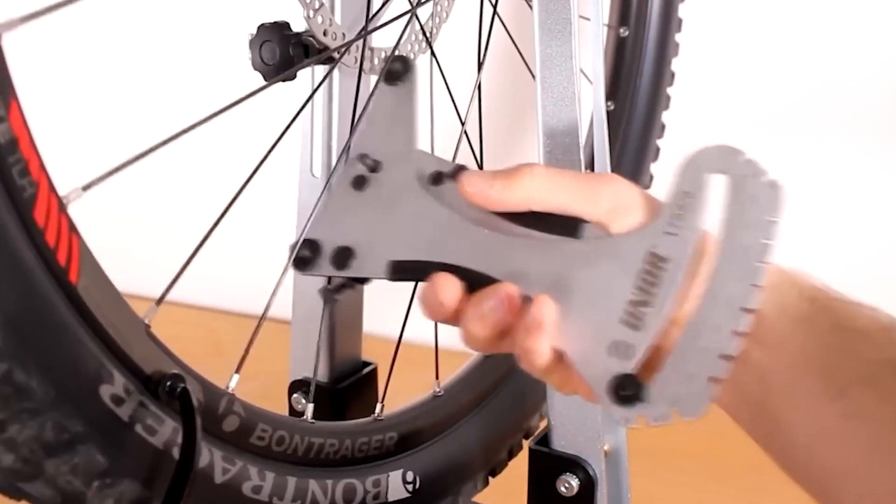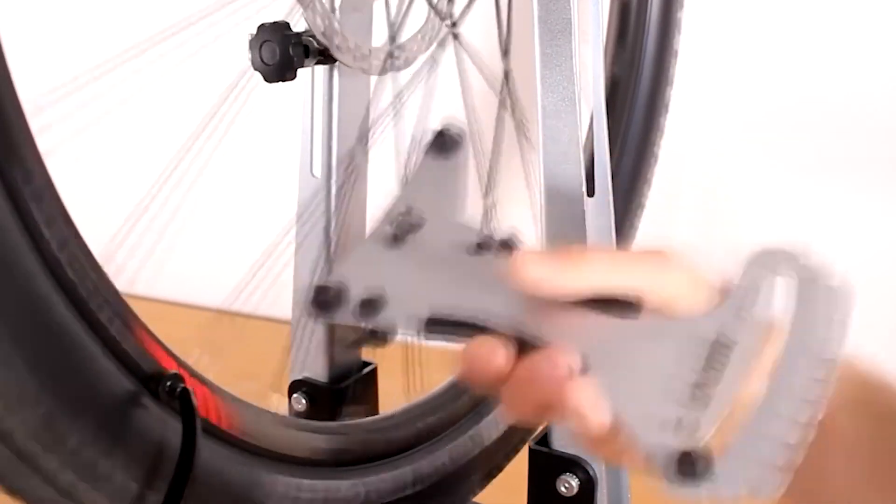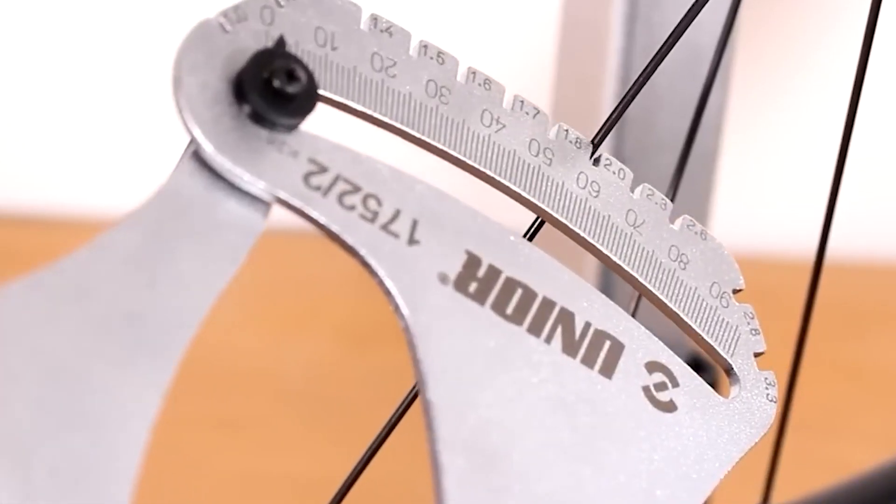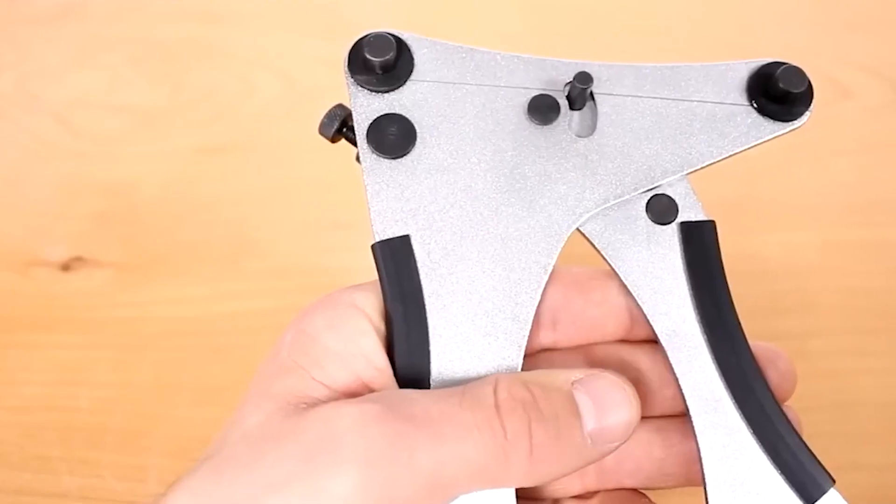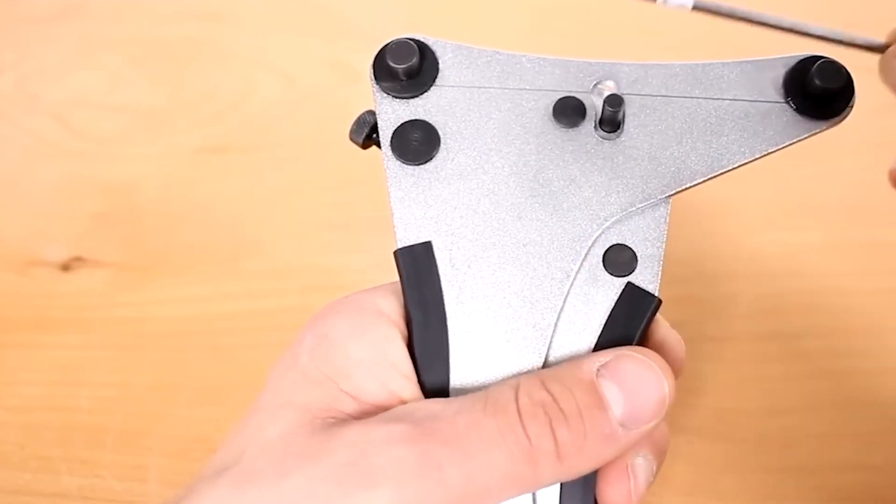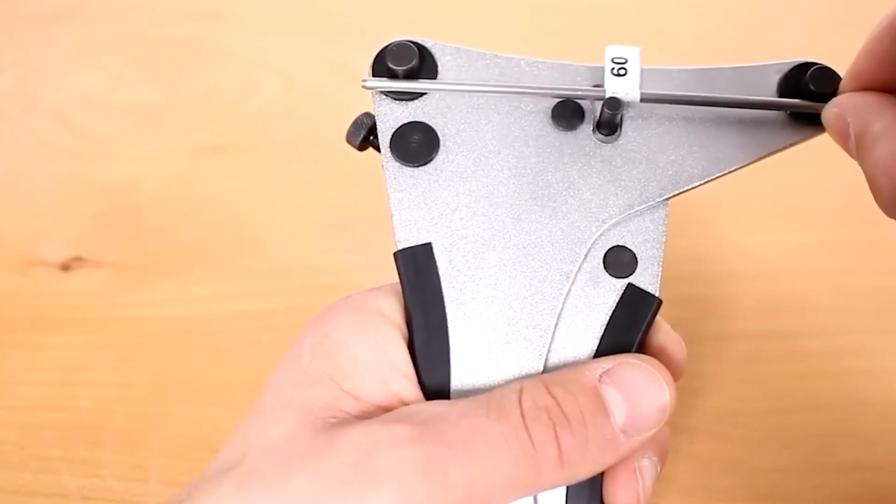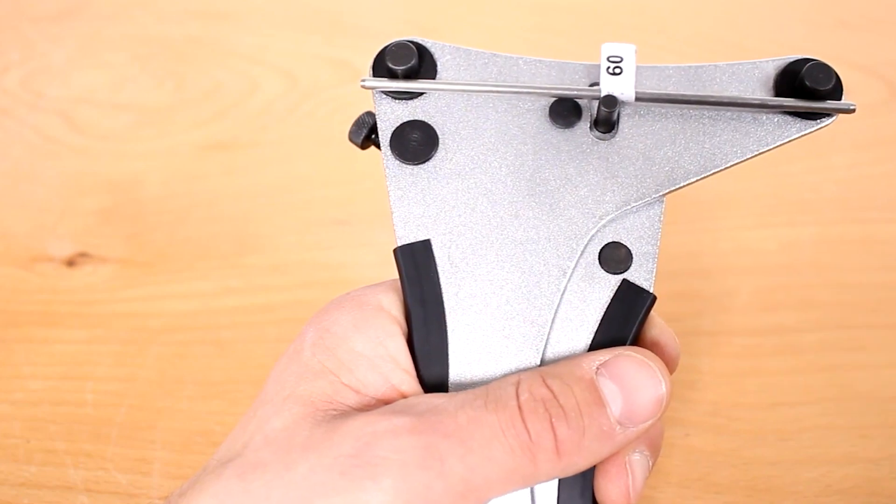This device comes pre-calibrated and ready for use, eliminating the need for additional accessories. The package includes a comprehensive table of optimal values, allowing mechanics to effortlessly assess and adjust spoke tension.